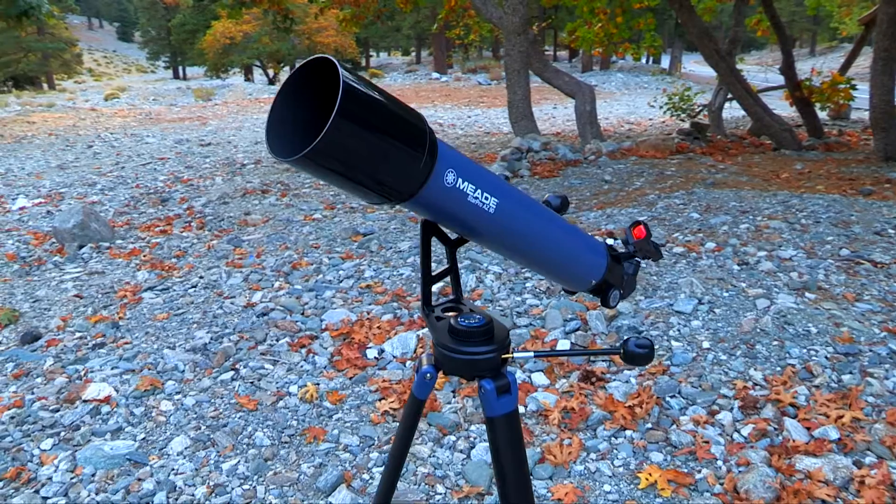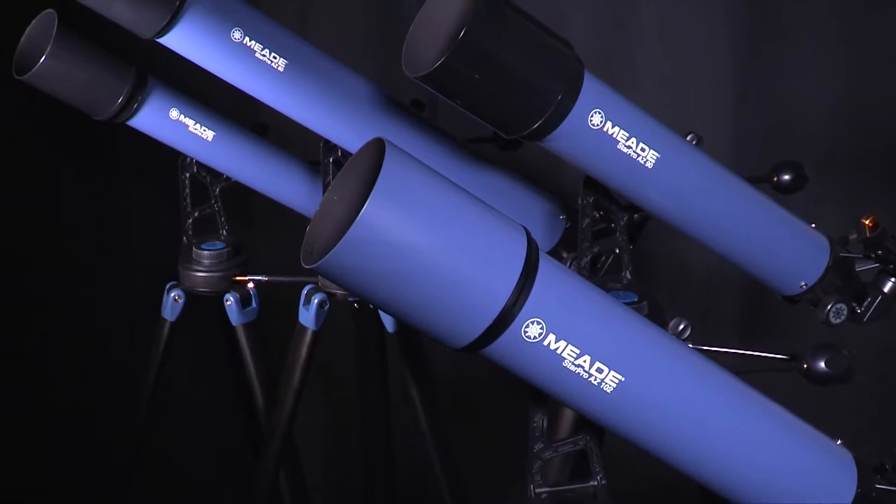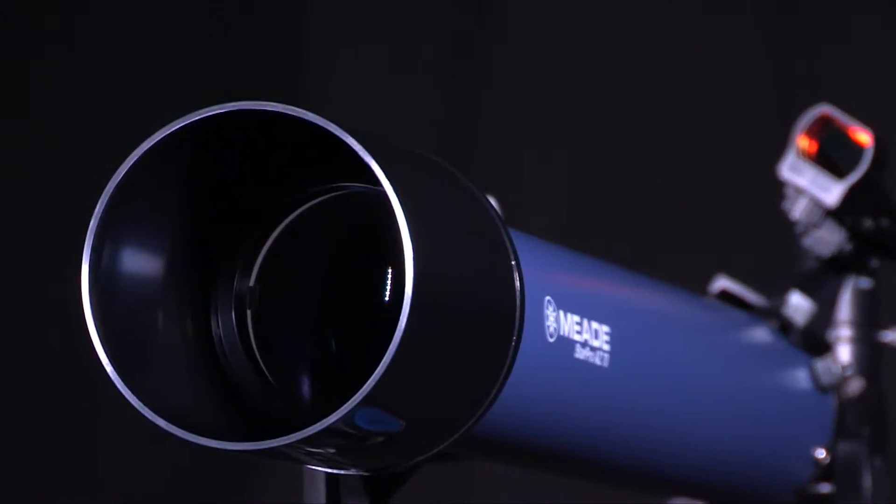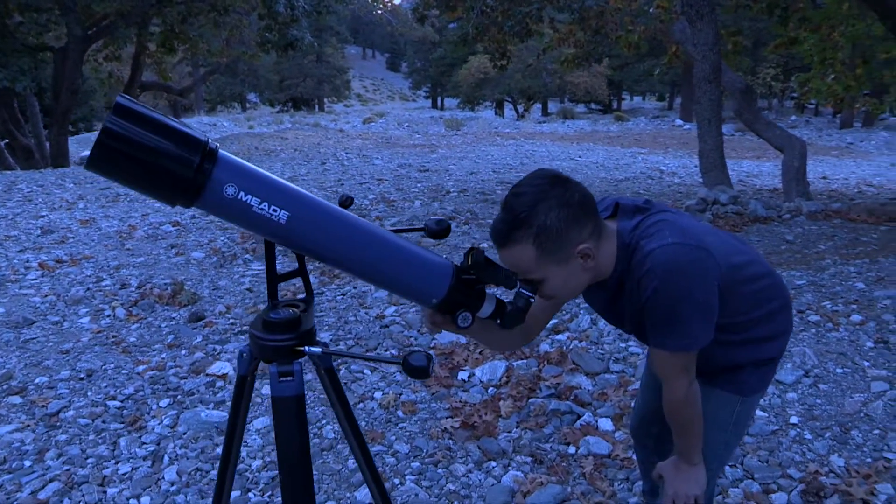The StarPro AZ is an easy-to-use portable telescope for the on-the-go astronomer. Each optical tube offered with the StarPro AZ includes fully coated optics resulting in bright, clear images of the moon, planets, nebula, and more.